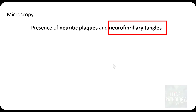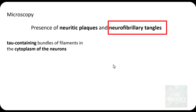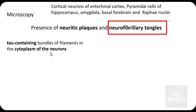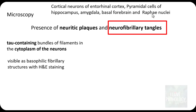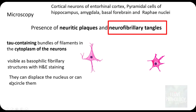Now let us see how neurofibrillary tangles look. They are tau-containing bundles of filaments in the cytoplasm of neurons. Initially they are intracellular; later, when the neuronal cell dies, they become extracellular. They are found in cortical neurons of the entorhinal cortex, pyramidal cells of the hippocampus, amygdala, basal forebrain, and raphe nuclei. On H&E stained slides they are visible as basophilic fibrillary structures. They can displace the nucleus toward the periphery or encircle it — sometimes the nucleus is not visible at all.